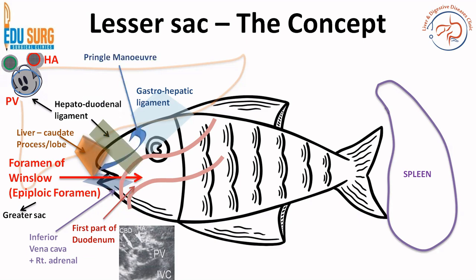This is a very important area. If you want to enter into this area, a very commonly asked question is Pringle's maneuver. To perform Pringle's maneuver, you want to clamp the hepatoduodenal ligament. How do you clamp the hepatoduodenal ligament? By passing a finger through the foramen of Winslow. For that, you may have to open the gastro-hepatic ligament, pass a finger across the hepatoduodenal ligament, then pass a loop across it and clamp it. If you clamp the hepatoduodenal ligament end to toe, it is known as Pringle's maneuver — a life-saving maneuver in cases of major bleeds from the liver or the hepatic artery.